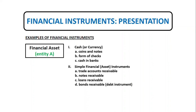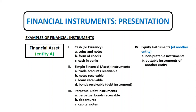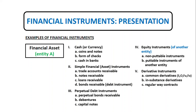We also have perpetual debt instruments like perpetual bonds receivable, debentures, and capital notes. Then we have equity instruments issued by another entity, including non-puttable instruments and puttable instruments of another entity. We also have derivative instruments — a separate topic that needs deeper discussion, but we will cover it here for an overview. Examples of derivatives include common derivatives like swaps, options, futures, and forward contracts. We also have in-substance derivatives, which are not technically derivative contracts but fall into the derivative instrument classification in their accounting and economic substance form. Then we also have regular way contracts. Financial assets are always favorable to the entity — any transaction that is favorable to the entity results in a financial asset.